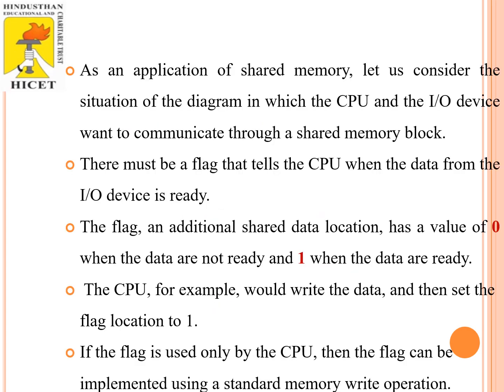As an application of shared memory, consider the situation where the CPU and the input-output device want to communicate through a shared memory block. A particular flag tells the CPU when the data from the devices is ready. The flag puts two different values: 0 indicates the data is not ready, and 1 indicates when the data is ready. The CPU, for example, would write the data and then set the flag location to 1. If the flag is used only by the CPU, then it can be implemented using a standard memory write operation.